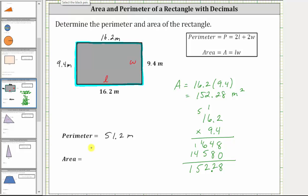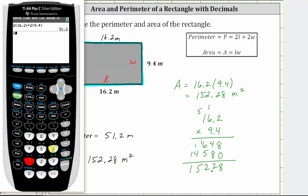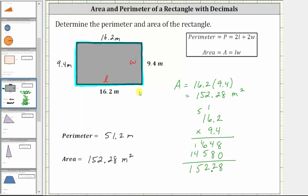So this is the area. But we'll go ahead and check it on the calculator before we go. 16.2 times 9.4 is 152.28. Verifying the area is correct. I hope you found this helpful.